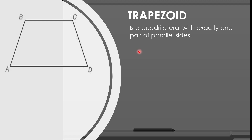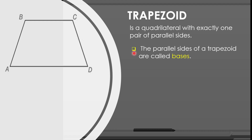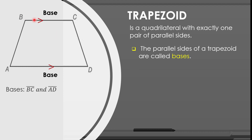Here are the following properties of a trapezoid. First, the parallel sides of a trapezoid are called bases. So, in our figure, the parallel sides are side BC and side AB, and they are the bases of this trapezoid.